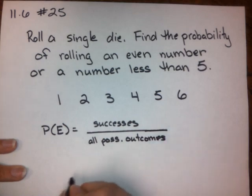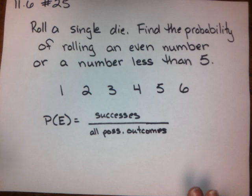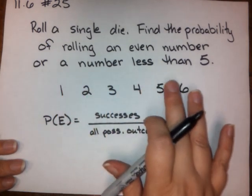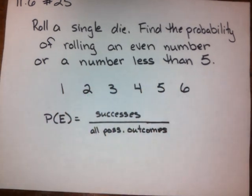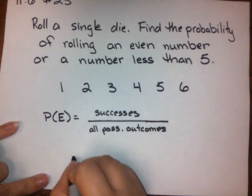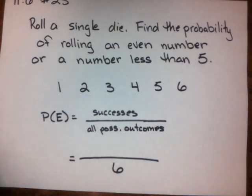So in this case, the probability of rolling an even number or a number less than 5 — let's start with the easy part. What are all of the possible outcomes? We could roll a 1, a 2, a 3, a 4, a 5, or a 6. Any time you roll a die, those are the possible outcomes. So we're looking at 6 down here — that's all of the possible outcomes.